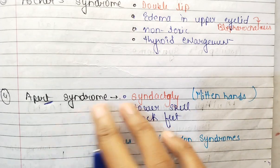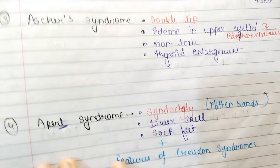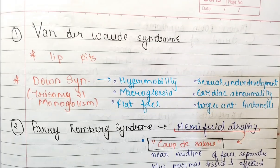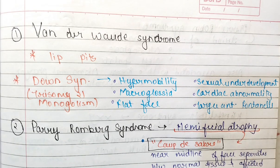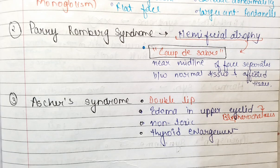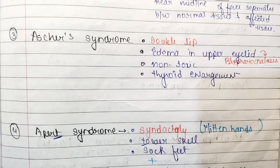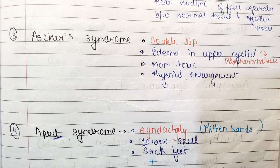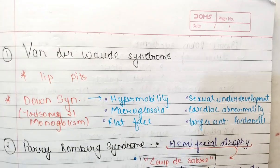So this is all about it for this video. We covered five syndromes: Van der Woude syndrome equals lip pits; Down syndrome — as a dentist you will see hypermobility of the teeth, macroglossia, and flat face; Parry-Romberg syndrome equals hemifacial atrophy; Ascher syndrome — double lip, blepharochalasis, non-toxic thyroid enlargement; and Apert syndrome — tower skull, syndactyly, with mitten hands on hands and sock feet on feet, plus features of Crouzon syndrome.